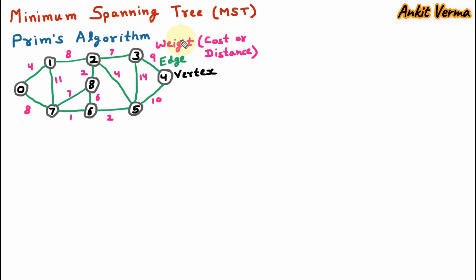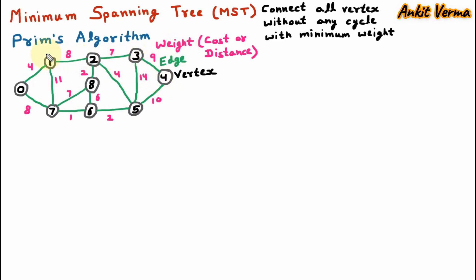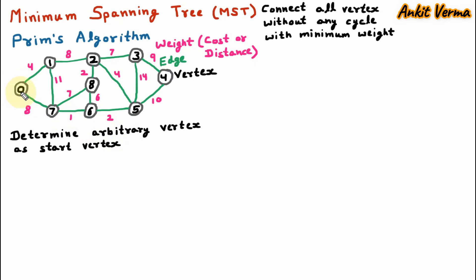A minimum spanning tree connects all the vertices without having any cycle and with minimum weight. Here we are using Prim's algorithm to construct the minimum spanning tree from this graph. The Prim's algorithm says that first we have to find some arbitrary vertex that will act as the start vertex. Here we are assuming that vertex 0 is the start vertex.